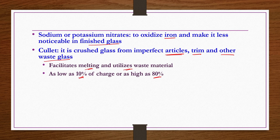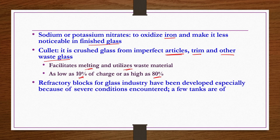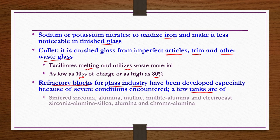Pot furnaces and tank furnaces are the two types of glass furnaces. Pot furnaces are used for small quantities — around 1 or 2 tons — while tank furnaces are used for large quantity glass making, like hundreds of tons per day. Refractory blocks are also essential for the glass industry because you are supplying very high temperatures (1200 to 1400 degrees centigrade). Few types of refractory blocks used include sintered zirconia alumina, moonlight alumina, electrofused zirconia alumina silica, and chrome alumina.